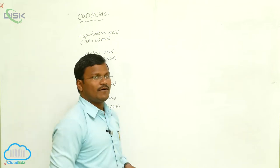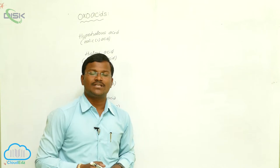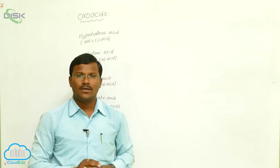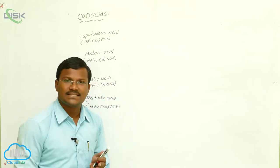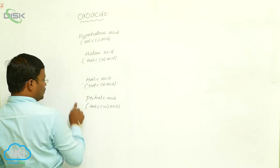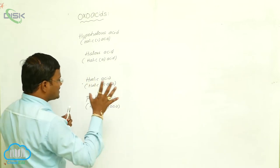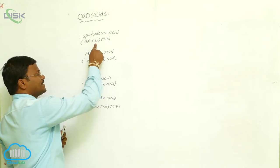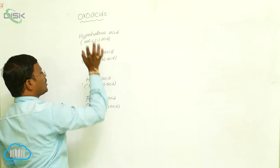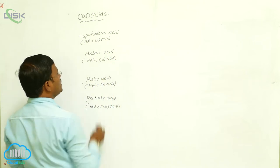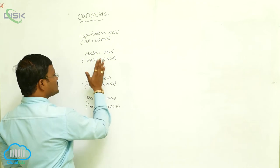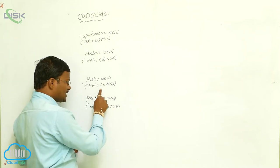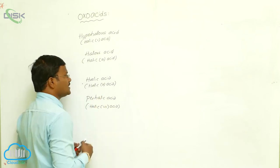As explained previously, halogens generally exhibit oxidation states of −1, +1, +3, +5, and +7. In hypohalous acids, halogens exhibit +1 oxidation state (or −1 in the case of fluorine). In halous acids it is +3, in halic acids +5, and in perhalic acids +7.